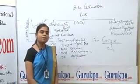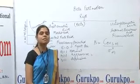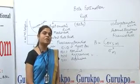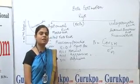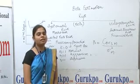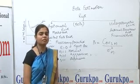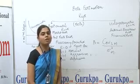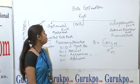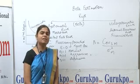Before discussing beta, it is very essential to know the meaning of risk. Risk means variability in the returns. When our actual returns differ from our expected return, then risk occurs. There are two types of risk: first one is systematic risk and second one is unsystematic risk.